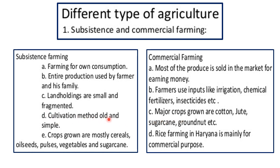In subsistence farming, cultivation methods are old and simple, while in commercial farming modern methods are applied. Crops grown in subsistence farming are mostly cereals, oil seeds, pulses, vegetables, and sugarcane. In commercial farming, the crops grown are cotton, jute, sugarcane, groundnut, and oil seeds.